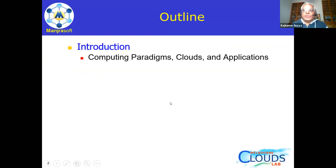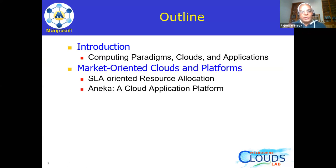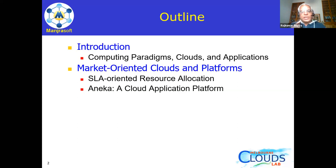Here is the outline for today's discussion. First, I'll briefly cover the different computing patterns that emerged over the last 50 years, then bring you to edge computing, cloud computing, and IoT. We'll discuss cloud architecture — specifically market-oriented cloud architecture — and a software platform called Aneka that we developed. I'll also discuss example applications, including big data-oriented and IoT applications, and a case study on applying Aneka to object detection and deep learning.